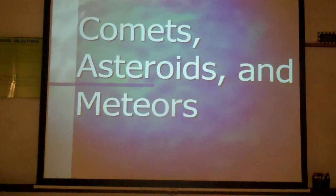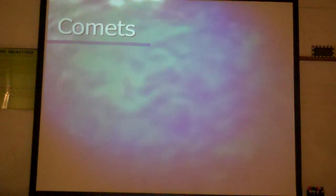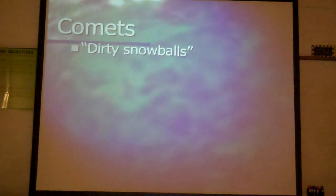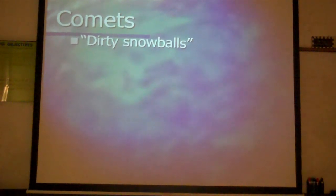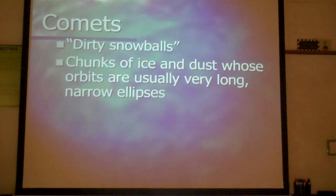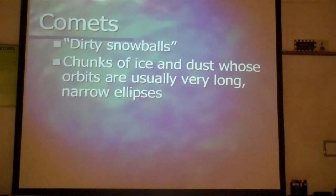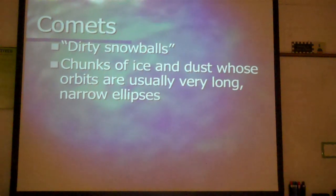The first area we are going to cover is Comets. Comets are also called Dirty Snowballs because they are chunks of ice and dust whose orbits are usually very long and very narrow ellipses.